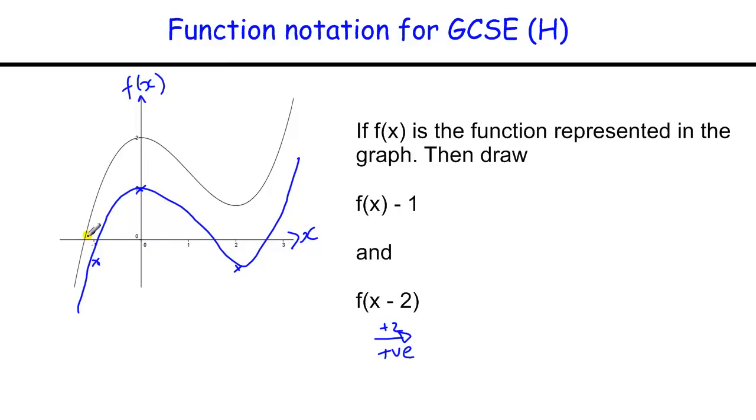So it's adding 2 to each point and making it move to the right. So this point, which is just below minus 1, it's going to move 2 to the right, so it's going to be just below 1. This point, which is at 0, it's going to move across to 2. And this point, which is at 2, it's going to move across to 4. And I would redraw the graph like that.